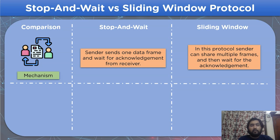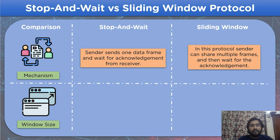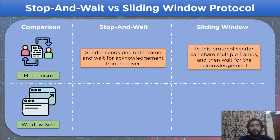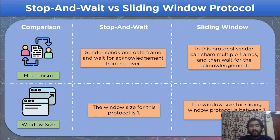Let's move on to the next comparison, based on window size. The stop-and-wait protocol's window size is always fixed at 1. As for the sliding window protocol, as we saw in earlier slides, it varies according to the scenario in the network channel.